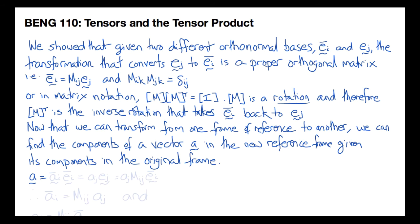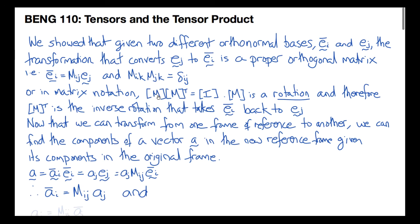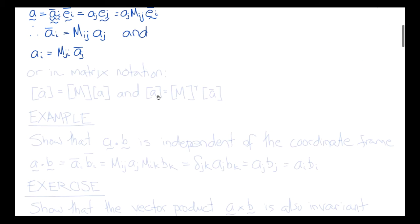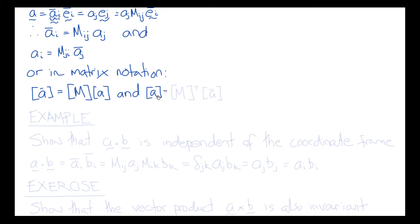The vector A has components AI_bar in EI_bar and AJ in EJ. Therefore, the components of the vector in the two frames of reference are related by M: AI_bar equals MIJ times AJ. And similarly, AI equals MJI times AJ_bar, where MJI is the transpose of MIJ and therefore the inverse since M is orthogonal. In matrix notation, A_bar equals M times A, and A equals M-transpose times A_bar.